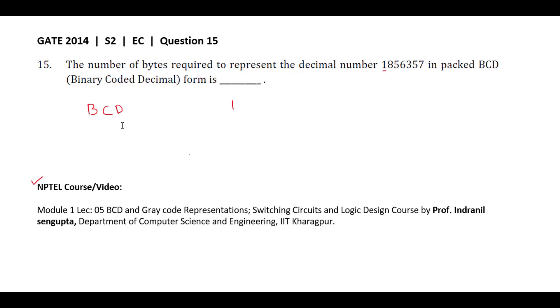Here, the given decimal number is 1856357. In BCD format, each digit is represented in equivalent four-bit binary form. So 7 can be represented as 0111, and 5 can be represented as 0101.